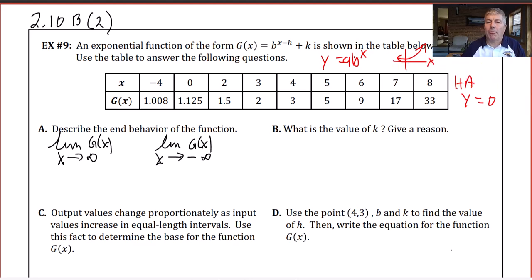Recall, however, in an exponential function y equals a times b to the x, we have a horizontal asymptote at y equals 0, and the function is increasing and it's going to go through the point (0,1). But when we start moving it around and doing transformations, of course, that's going to change things.